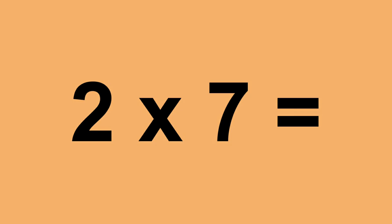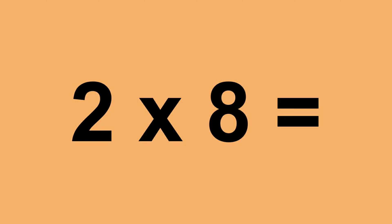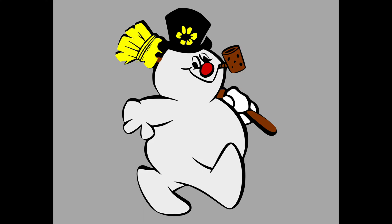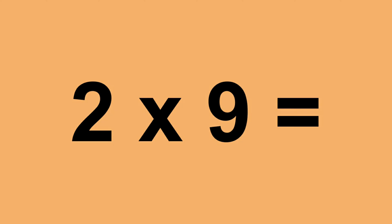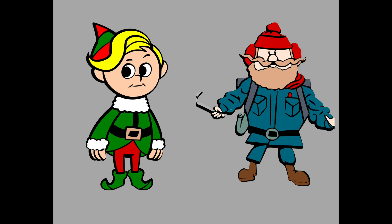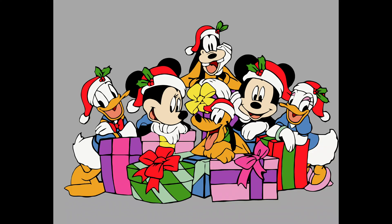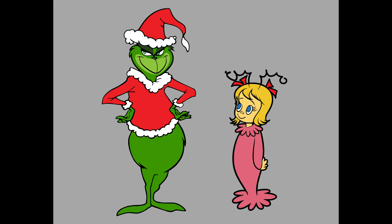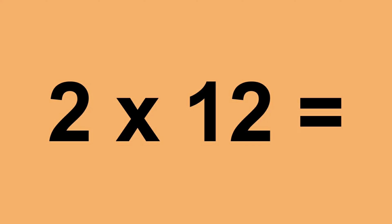Two times seven equals fourteen. Two times eight equals sixteen. Two times nine equals eighteen. Two times ten equals twenty. Two times eleven equals twenty-two. Two times twelve equals twenty-four.